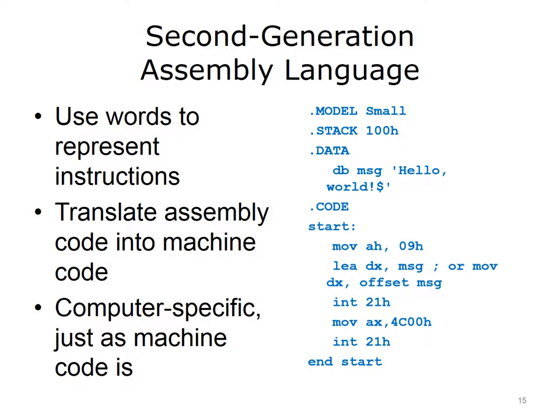While sequences of zeros and ones are understandable to a computer, they are not particularly clear to humans. Assembly languages used words to represent instructions and data. The slide displays an example of assembly code — an improvement over zeros and ones, but still tedious to read and program. Also, because assembly language is almost a direct translation of machine code, it is unique to each computer system. That means that the same program written to run on a Windows 10 PC would need to be rewritten to run on an iMac. Also, because each statement is a short machine instruction, assembly code is very, very long.